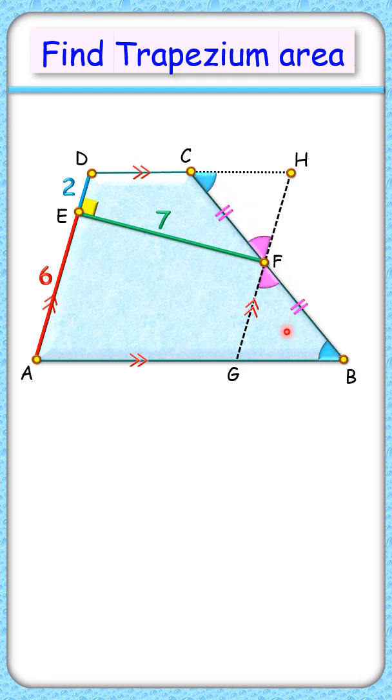Thus, these two triangles are congruent. Let's cut this trapezium along line GF and shift this triangle upward. So our original trapezium has changed into a parallelogram now.